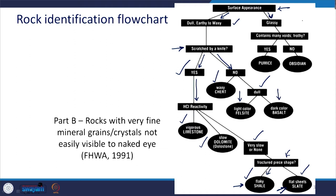If the surface appearance of the rock is glassy, we need to see whether it contains many voids — whether it is frothy. If yes, it is pumice; if no, it is obsidian. Pumice — you must have seen this in day-to-day use — the pumice stone is the same thing as this pumice rock.